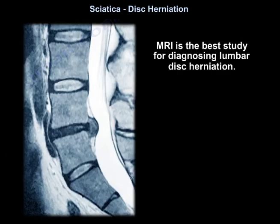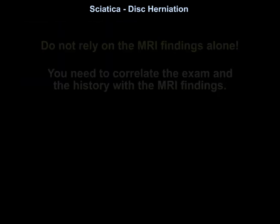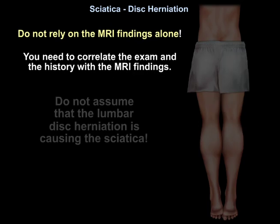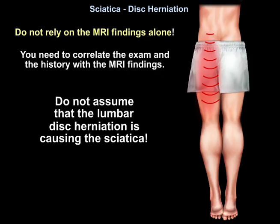MRI is the best study for diagnosing lumbar disc herniation. However, we should not rely on MRI findings alone — we need to correlate the exam and history with MRI findings, and not assume the lumbar disc herniation is causing the sciatica.